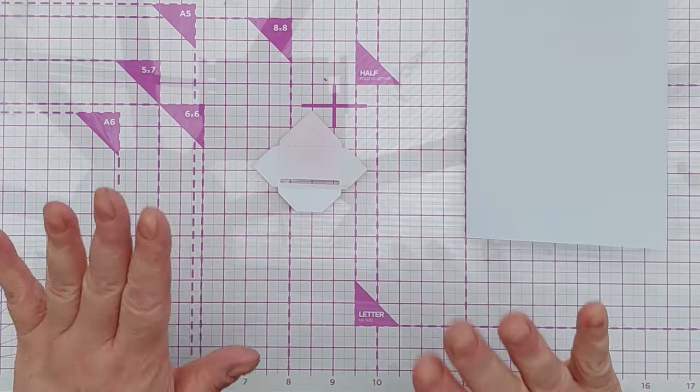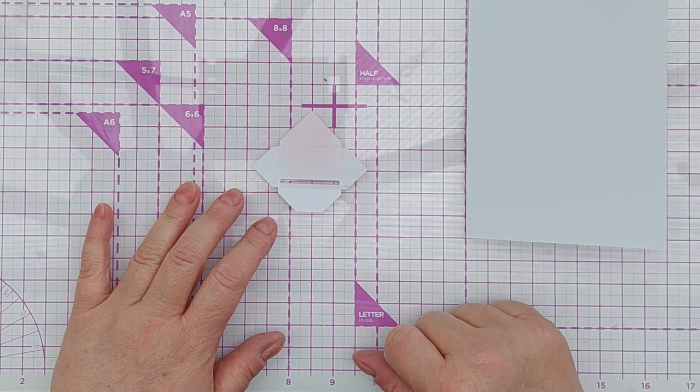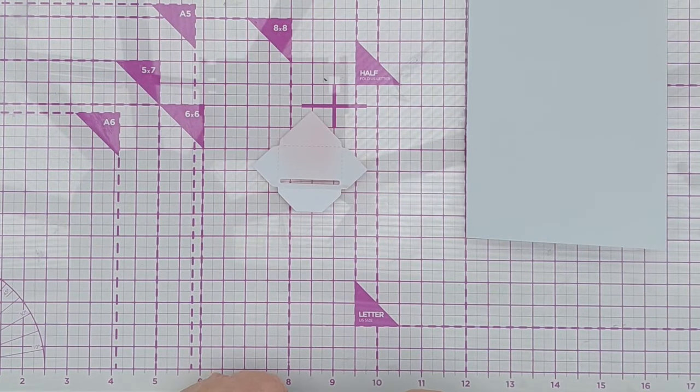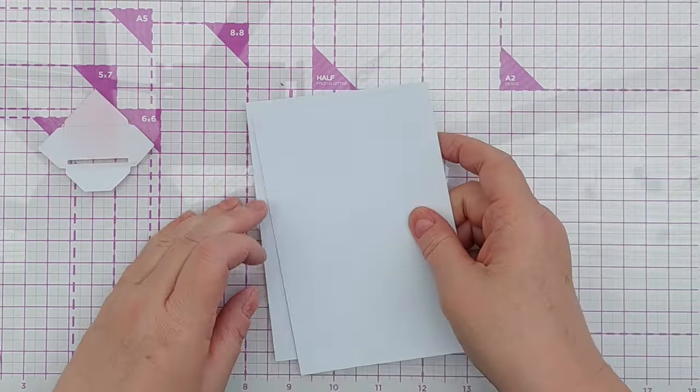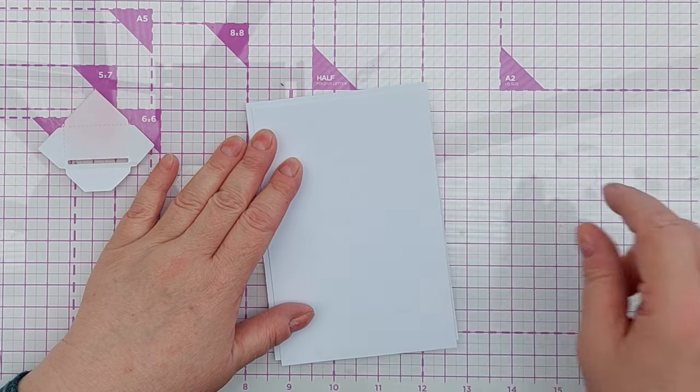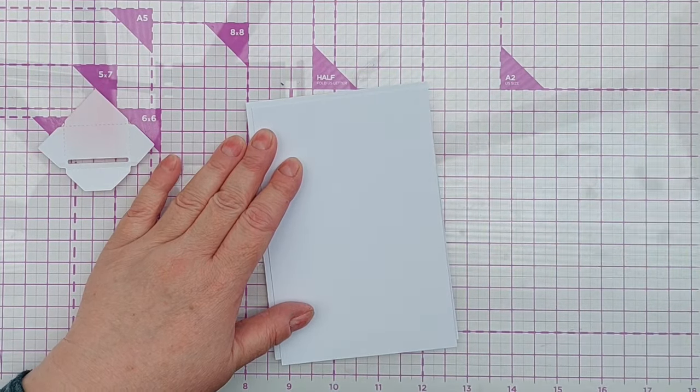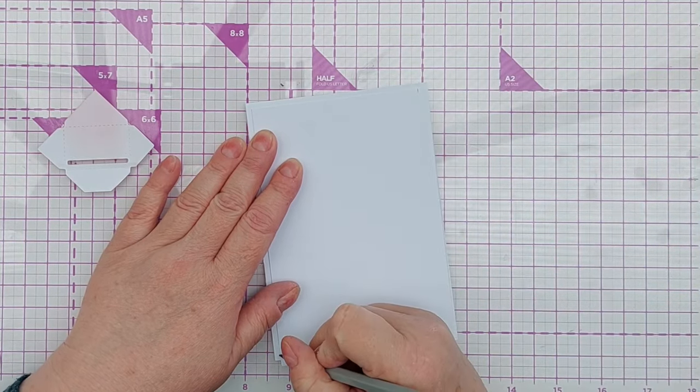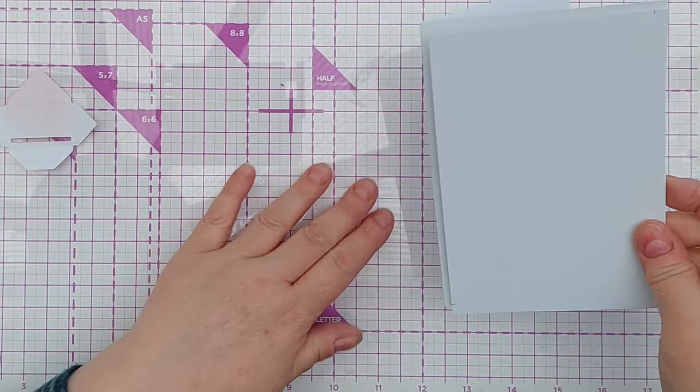Before I glue my envelope together though, I want to create the interactive part of my card. So I've got a panel here that is going to be, once I cut it down, about an eighth of an inch smaller than my four by six inch card blank.